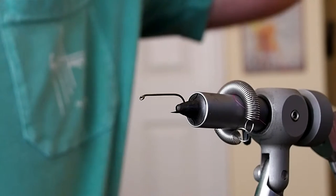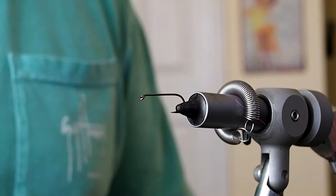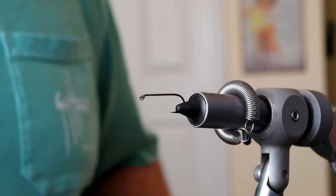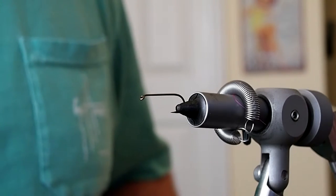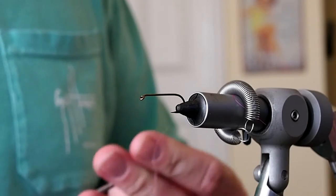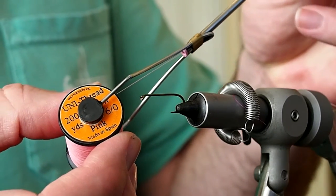For this particular fly I like to tie it with a 2X long hook. So in the vise I have a Daiichi 1710 in size 8. I'm going to be tying this fly with 6-aught uni-thread in pink.